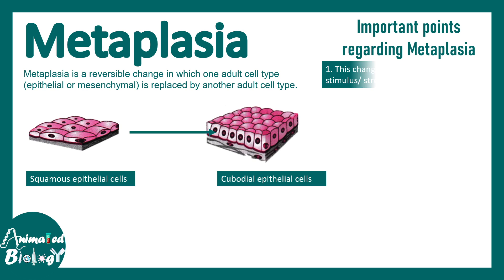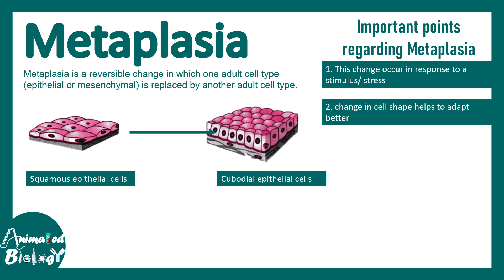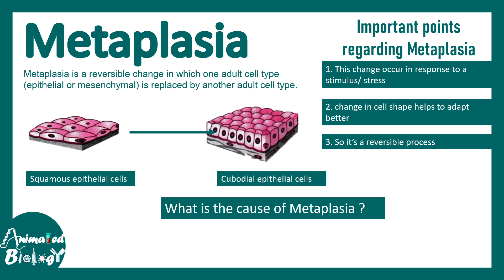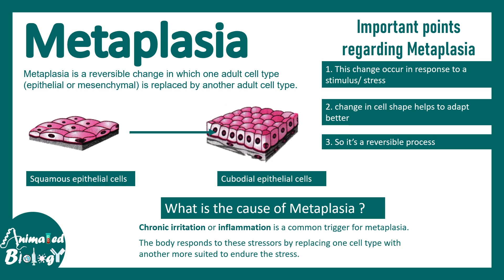A few important points: this change can occur in response to a stimulus or stress, the change happens at the cell shape level, and it is a reversible process — if you remove the stimulus and give it enough time to recover, it can change back. Metaplasia can be triggered by chronic irritation or inflammation, as the body responds by replacing one cell type with another better adapted to that stress.